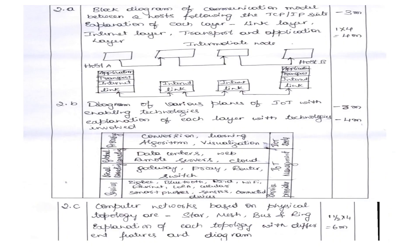The second set question covers the block diagram of the TCP/IP communication model. Draw the TCP/IP suite with two hosts — sender and receiver — representing each layer including link layer, internet layer, transport layer, physical layer, and application layer. The diagram carries about two to three marks, and explanation of all layers carries four marks.